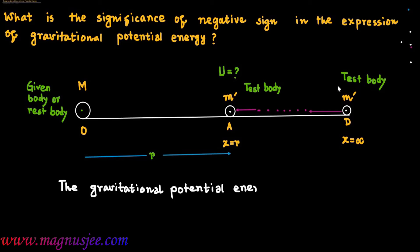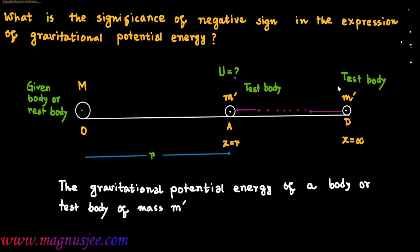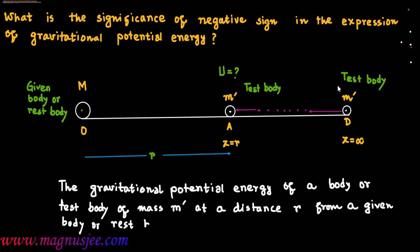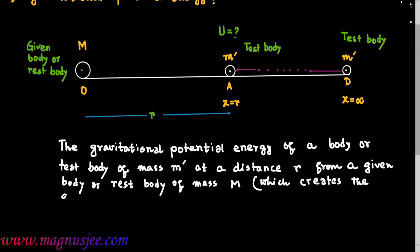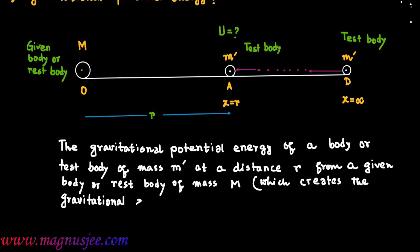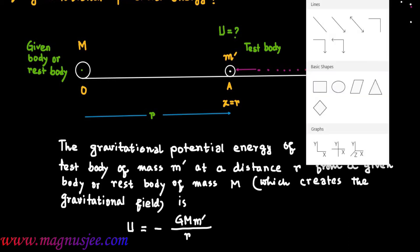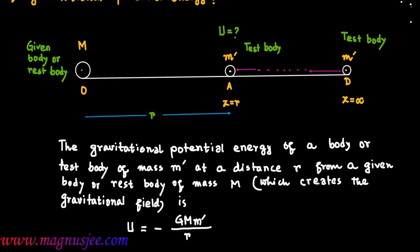The gravitational potential energy of a test body of mass M' at a distance r from a given body of mass M, which creates the gravitational field around it, is given by: capital U equals minus G capital M M' divided by small r.